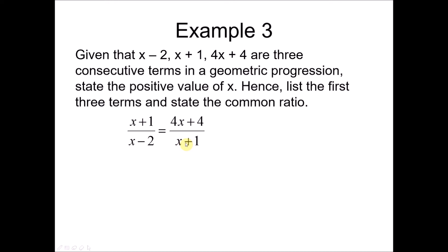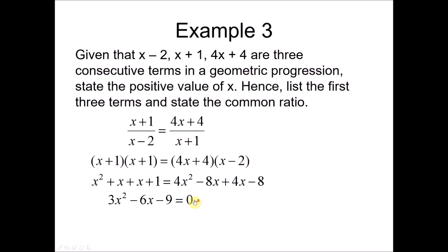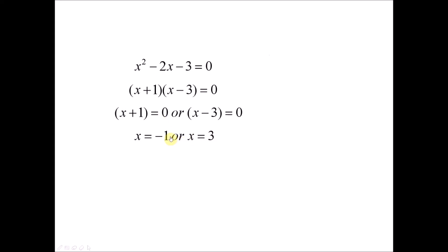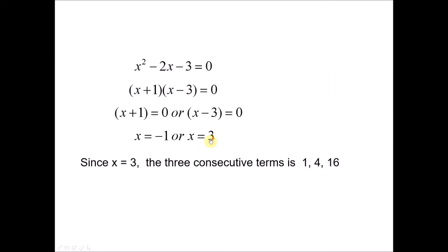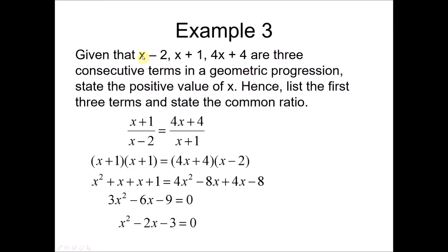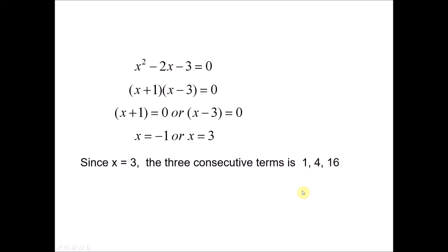After cross-multiplying and expanding, we simplify by dividing all terms by 3 and then factorize, giving x equals −1 or x equals 3. Since we want the positive value, x equals 3. Substituting: 3−2 gives 1, 3+1 gives 4, and 4(3)+4 gives 16. So the first three terms are 1, 4, and 16. The common ratio is 4 divided by 1, which is 4.